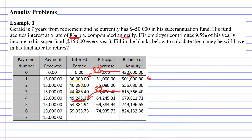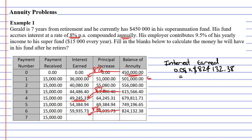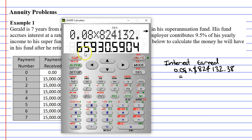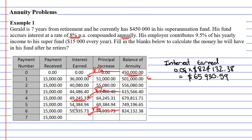So I reckon we can fill in one of the blanks already — the interest earned here. It's going to be 8% of our previous annuity balance. To calculate our interest earned, we take 0.08 and multiply it by our amount, which is $824,132.38. That comes to $65,930.59. Let's write this in our blank spot: $65,930.59.